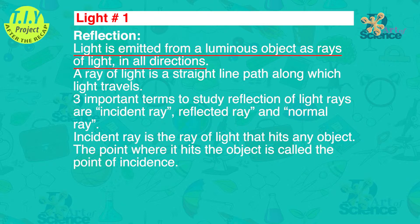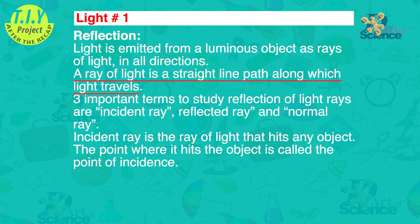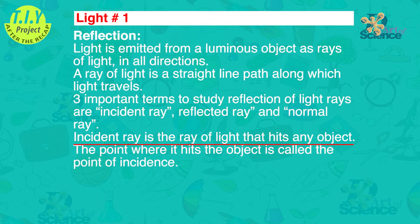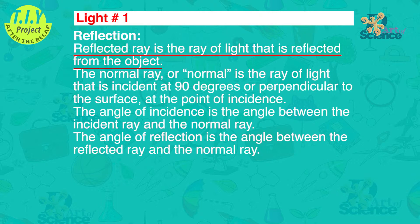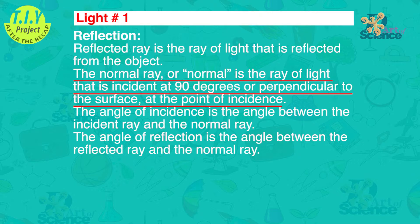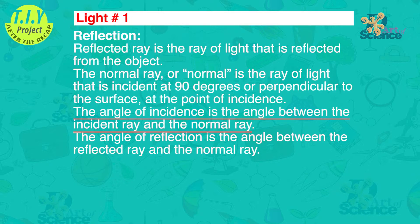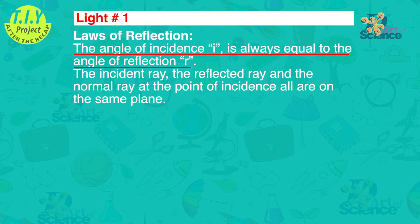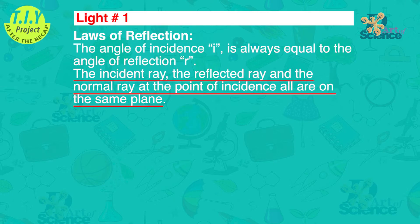Reflection: light is emitted from a luminous object as rays of light in all directions. A ray of light is a straight-line path along which light travels. Three important terms to study reflection of light are incident ray, reflected ray, and normal ray. The incident ray is the ray of light that hits any object; the point where it hits is called the point of incidence. The reflected ray is the ray of light reflected from the object. At the point of incidence, the normal is the ray perpendicular to the surface. The angle of incidence is the angle between the incident ray and normal, and the angle of reflection is the angle between the reflected ray and the normal.